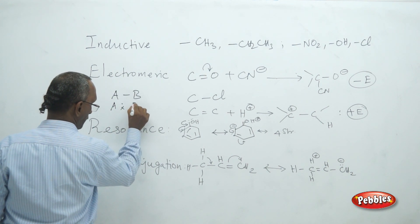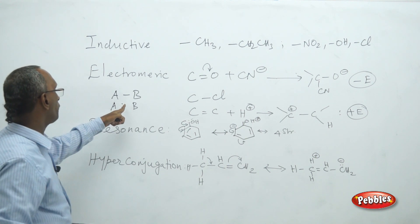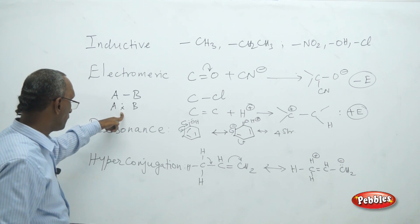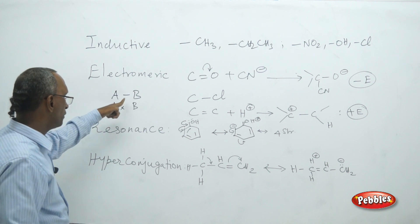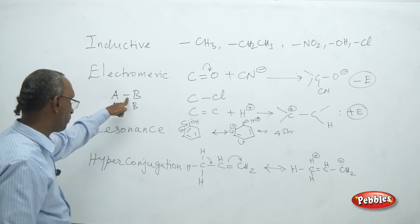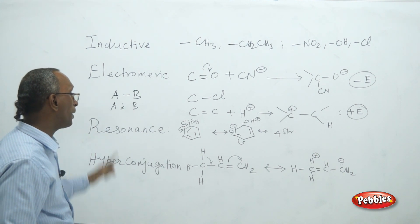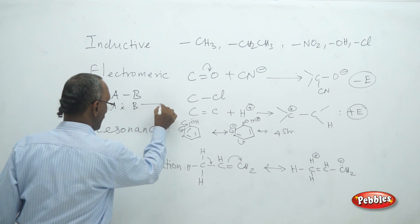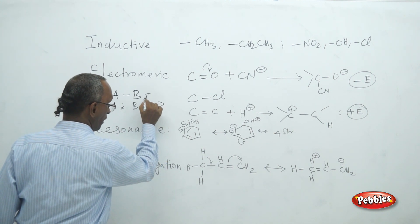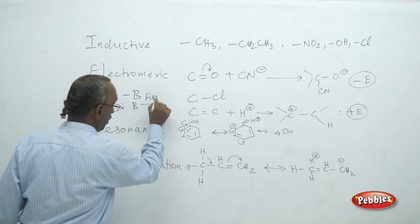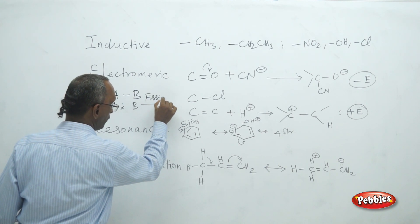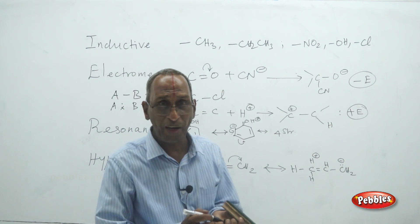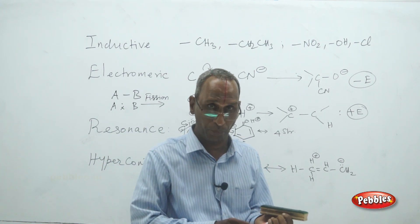Here it is marked — the dot refers to the electron of A, and the cross refers to the electron of B. The dot and cross are put together by means of a line to represent a covalent bond. Under certain conditions, this bond can be broken. The breaking of a covalent bond is called fission.